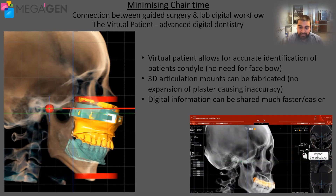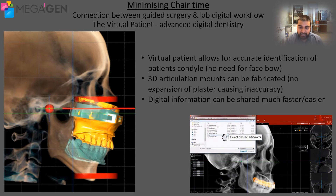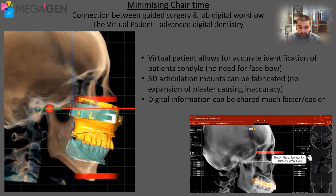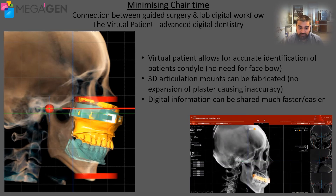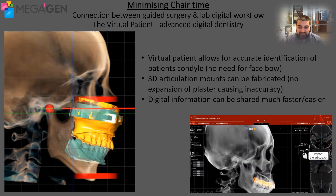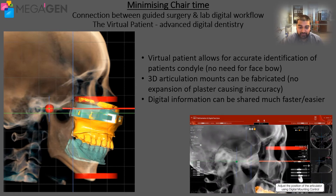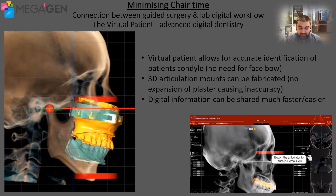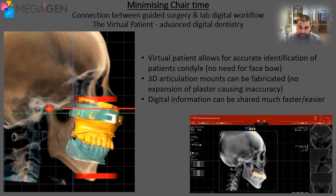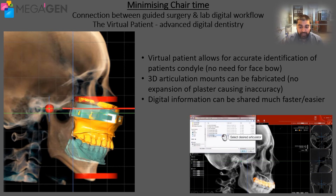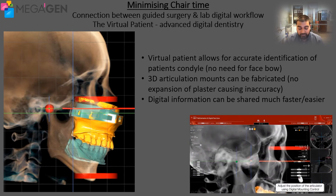Another thing to consider is that when articulating, although we're using a special plaster that has a lower expansion rate than normal die stone plaster, there is still an amount of expansion that takes place, which means that it's very time consuming to try and alleviate all of these variables. A really amazing thing within the digital workflow is that we are using the CBCT to actually identify the patient's condyle, which means we have a much more accurate identification of that hinge. We can then use that information to 3D print mounts for a model rather than relying on plaster, face bows, or bite registrations.